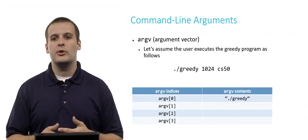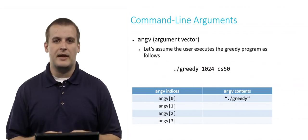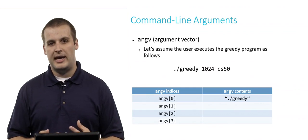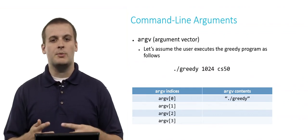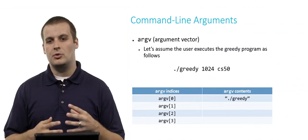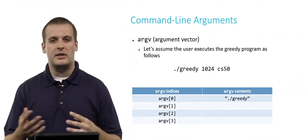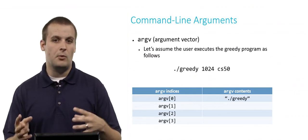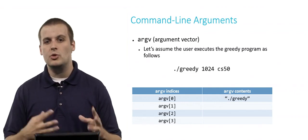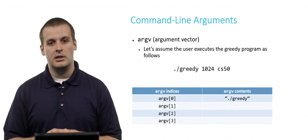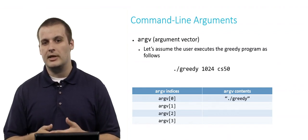So let's assume the user executes the greedy program as follows. If they type at the command line dot slash greedy space 1024 space CS50, and for whatever reason we've already prepared our greedy program to know and work with these command-line arguments. We didn't previously when we worked on it for the greedy problem, but let's say we've now modified it so that we do process the command-line arguments in some way.